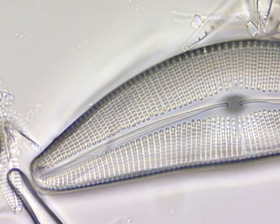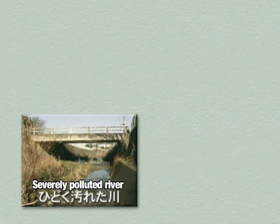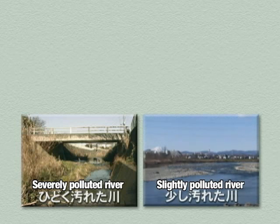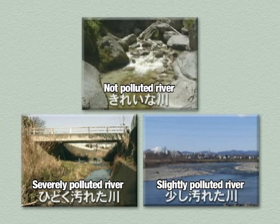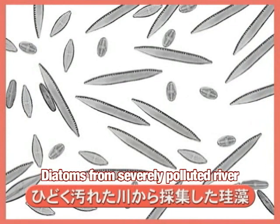And once again, in order, we will look at and compare the diatoms collected from the severely polluted water of the sewage canal, the slightly polluted river water, and the clean mountain stream water. First, we will look at the diatoms from the severely polluted water.